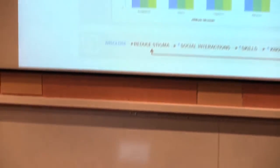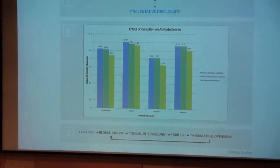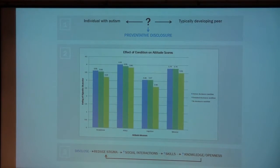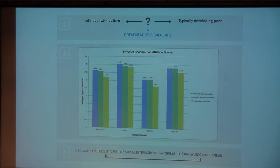In panel one of my slide, I show that it is important to study autism because individuals with autism often face social cognitive deficits, which makes it difficult for them to interact socially with their typically developing peers. These peers are often misinformed about autism and therefore more likely to stigmatize it.